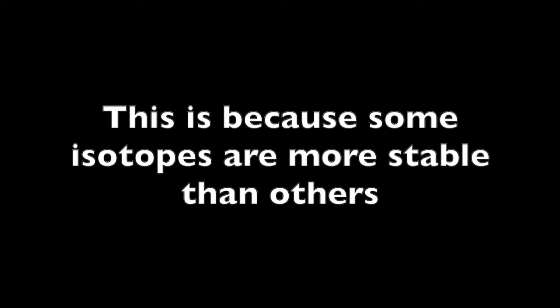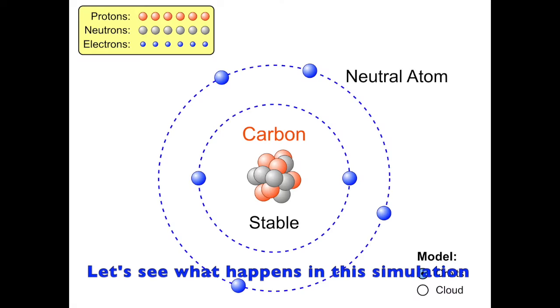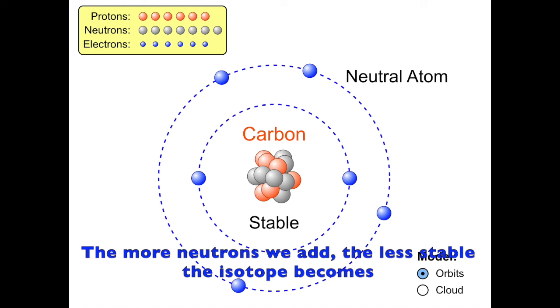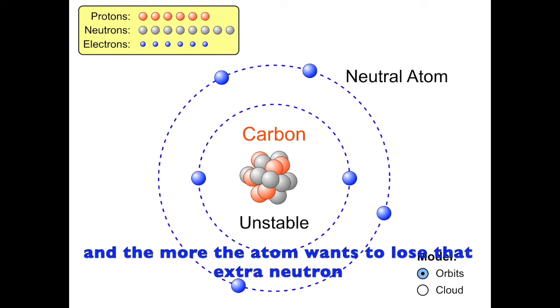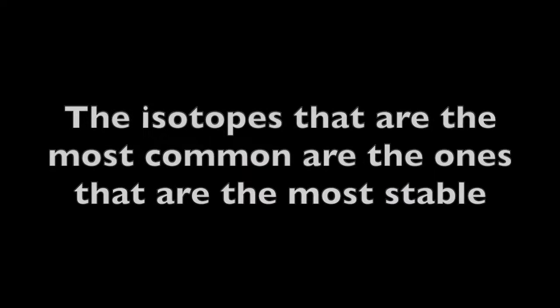This is because some isotopes are more stable than others. Let's see what happens in this simulation when we add neutrons to carbon. The more neutrons we add, the less stable the isotope becomes, and the more the atom wants to lose that extra neutron. The isotopes that are the most common are the ones that are the most stable.